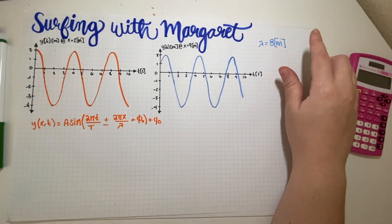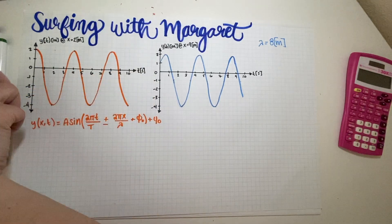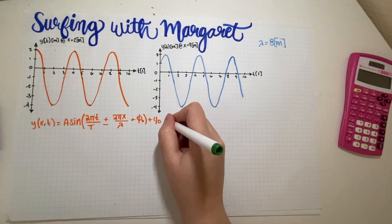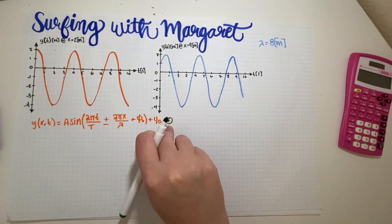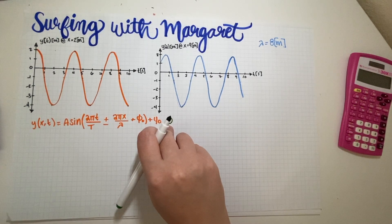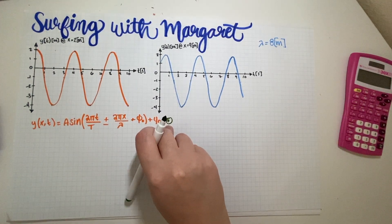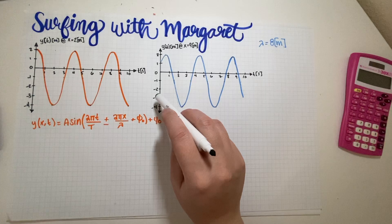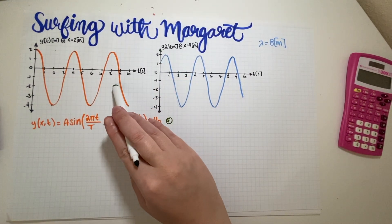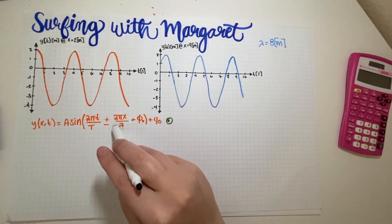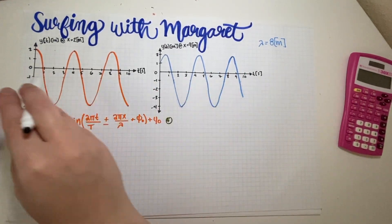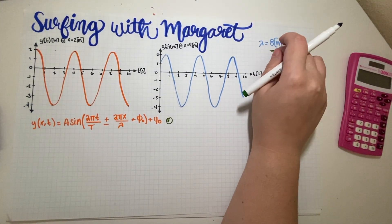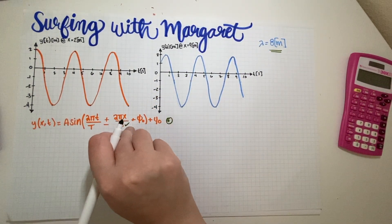I did my best to replicate both plots. Now, both graphs are y versus t — they are time graphs. This means that lambda could not possibly be figured out from either plot, because lambda is a distance and both axes are time. This is why the problem needed to give us lambda directly. So that one's figured out.